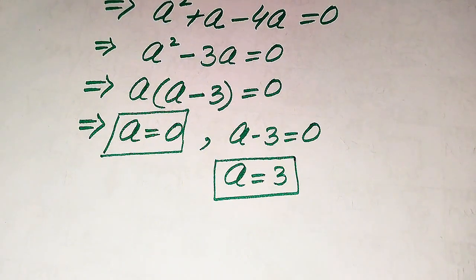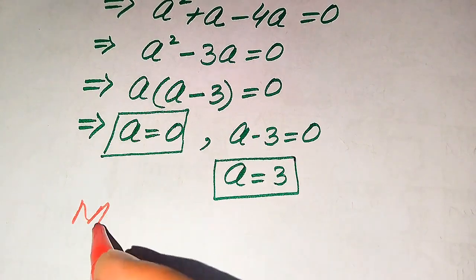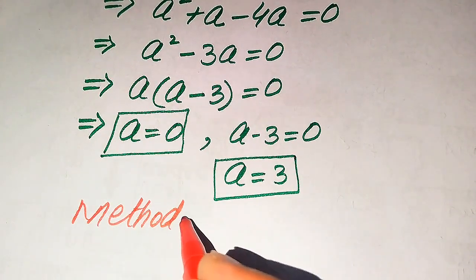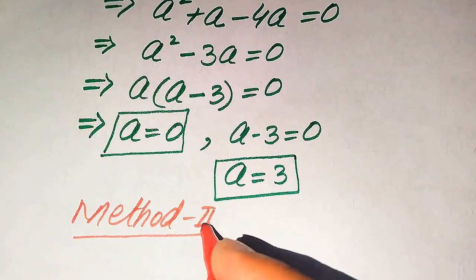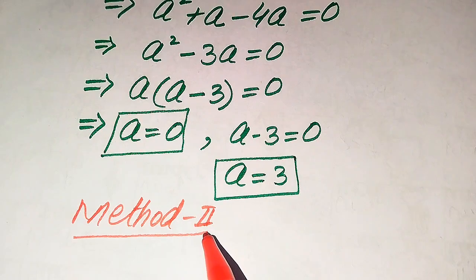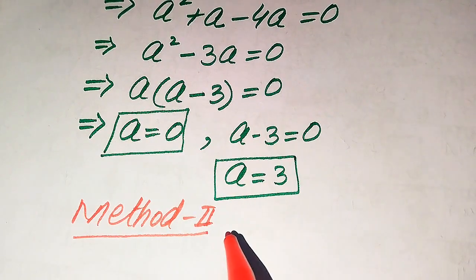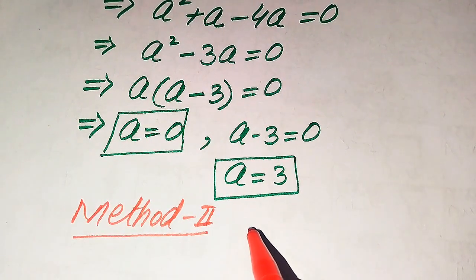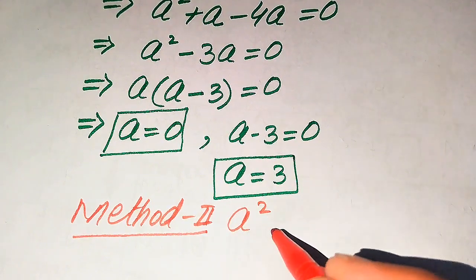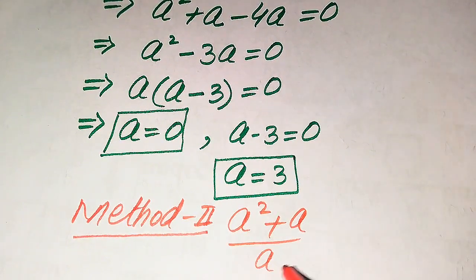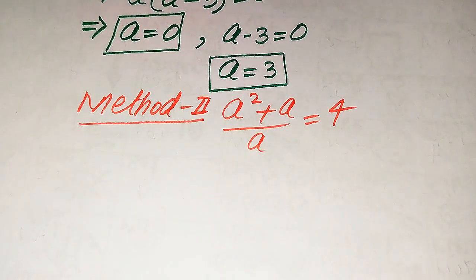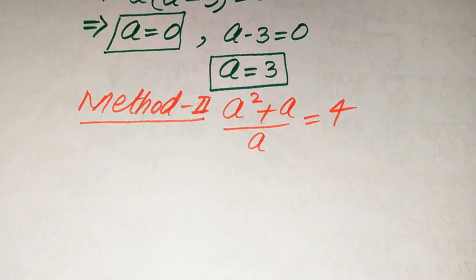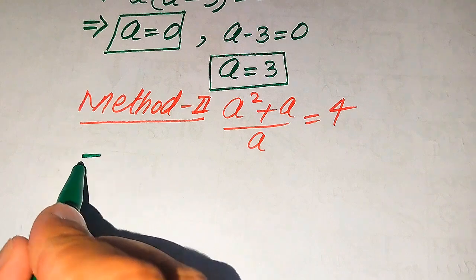Now we need to verify whether these roots are solutions or extraneous roots. First, let's look at the second method. We copy down the given equation: a squared plus a divided by a equals 4. In the second method, I'll give you a smart technique to easily get the values of a.